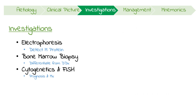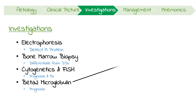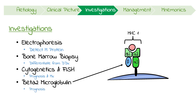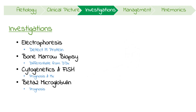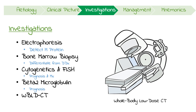Talking about prognosis, performing a serum beta-2 microglobulin is considered the most important factor for predicting survival. This is a protein complement of MHC class 1, and so its levels are correlated with tumor load. Finally, as this disease so commonly causes fractures, a whole-body low-dose CT is vital for detecting osteolytic lesions.